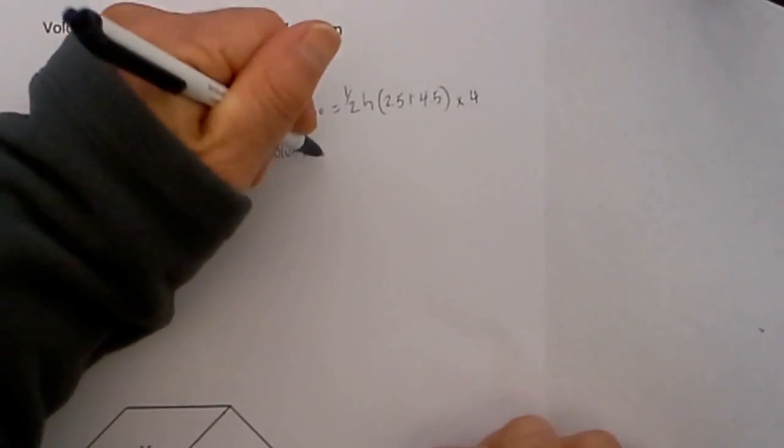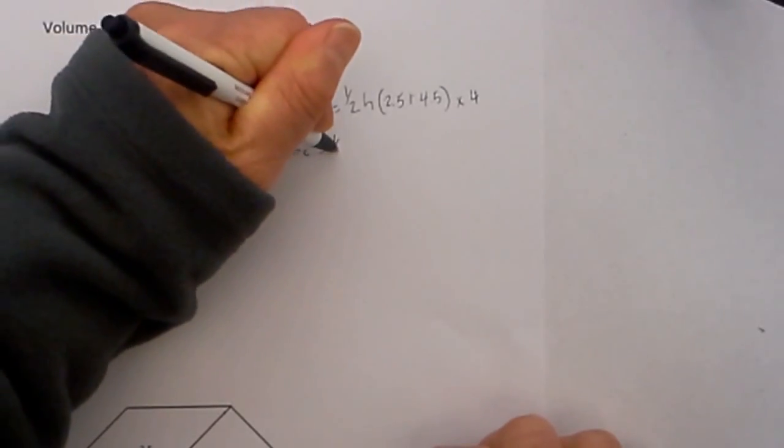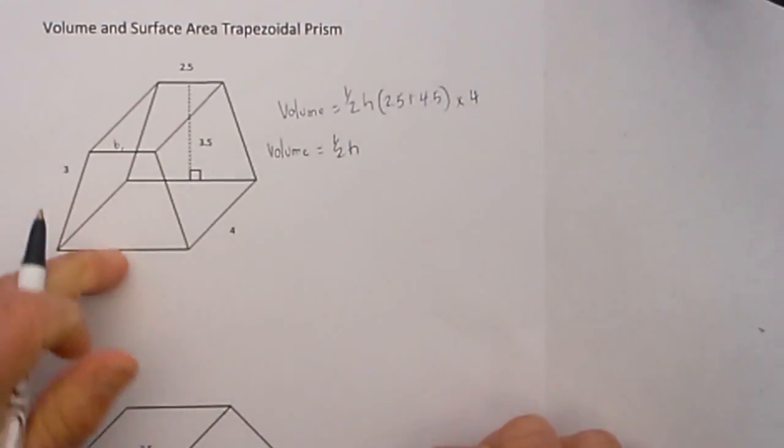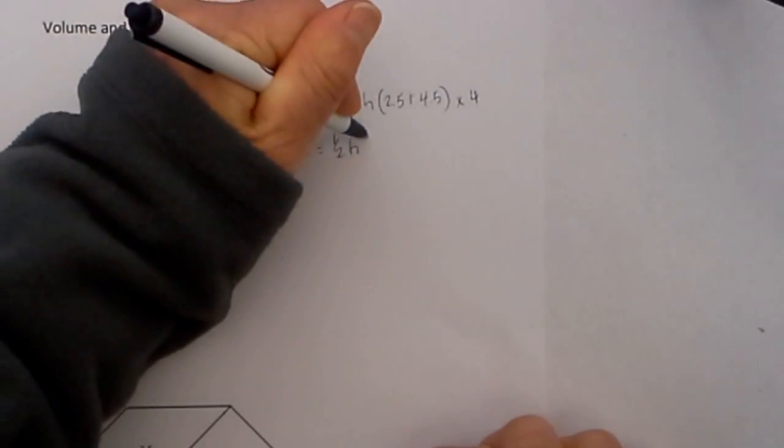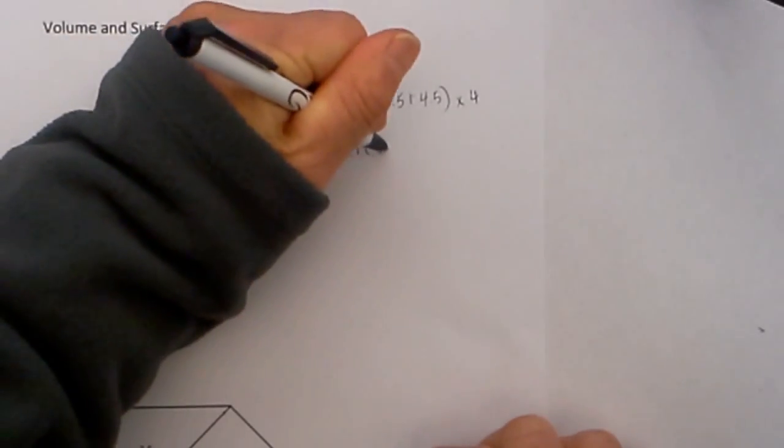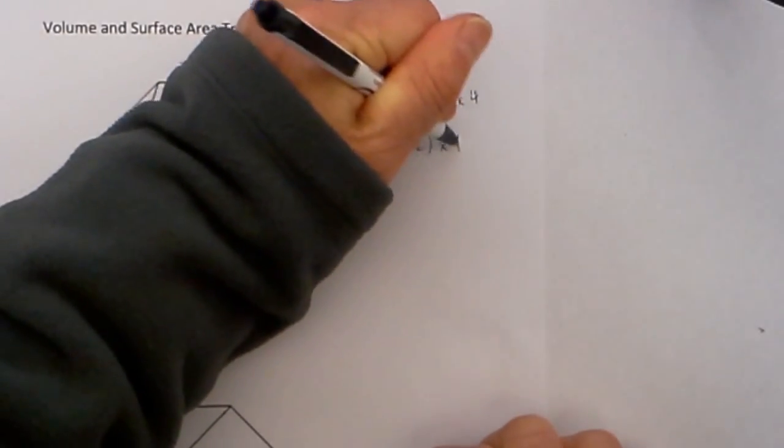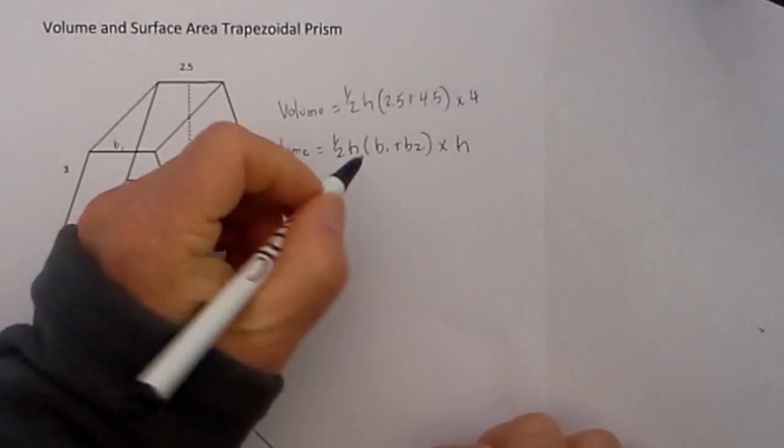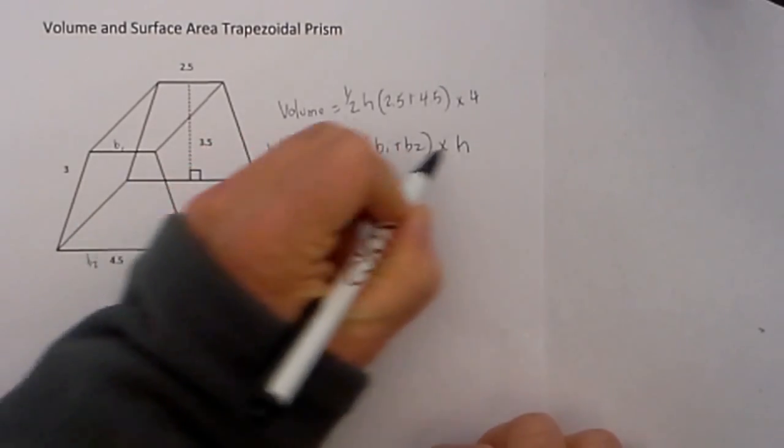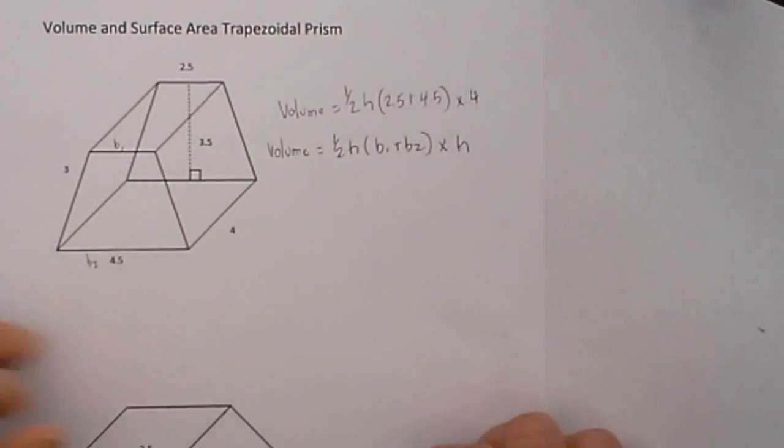The formula for finding volume is equal to 1/2 the height of the trapezoid times base 1 plus base 2 times the height of the actual prism. This height is the trapezoid and this second height is the actual prism.